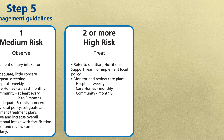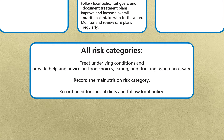For high risk patients, refer to dietitians, nutritional support team or implement local policy. Monitor and review care plans — hospitals weekly, care home monthly, and community monthly unless detrimental or no benefit is expected from nutritional support, for example imminent death. All risk categories would need treatment of underlying conditions and provide help and advice on food choices, eating and drinking when necessary. Record malnutrition risk category, the need for special diets, and follow local policy.